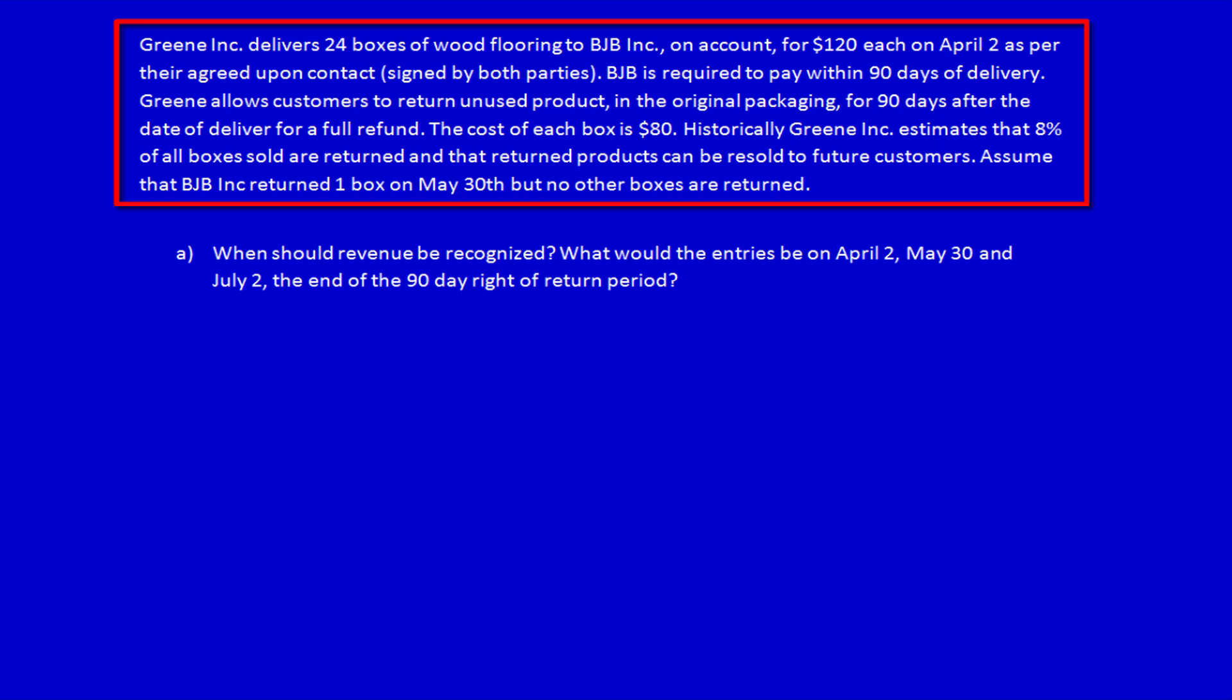Green Inc. delivers 24 boxes of wood flooring to BJB Inc. on account for $120 each on April 2nd as per their agreed upon contract signed by both parties. BJB is required to pay within 90 days of delivery. Green allows customers to return unused product in the original packaging for 90 days after the date of delivery for a full refund. The cost of each box to Green Inc. is $80. Historically, Green Inc. estimates that 8% of all boxes sold are returned and that returned products can be resold to future customers. Assume that BJB Inc. returned one box on May 30th but no other boxes were returned.